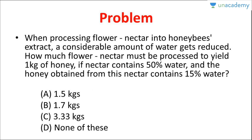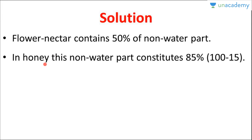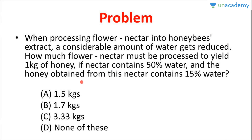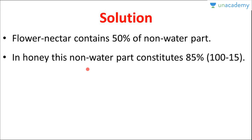The flower nectar contains 50% non-water part — that is the pulp or honey or solid material — while 50% is water. In honey, this non-water part constitutes 85%, because honey contains only 15% water. That's why in the honey, this non-water part (the pulp) is 85%.